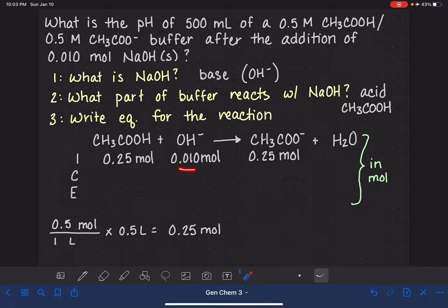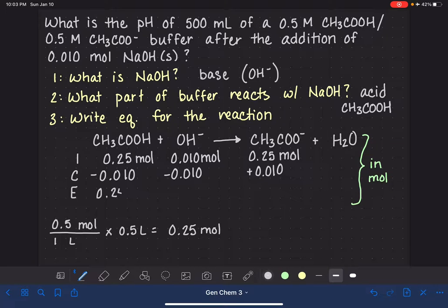Because we are dealing with a strong base, that means that this reaction is going all the way to completion. So that means we find the smaller of the two reactants, and we subtract that amount from all of the reactants and add that amount to our product. And when this reaction is all done, we are going to have 0.24 moles of acetic acid, no OH minus, and 0.26 moles of acetate.